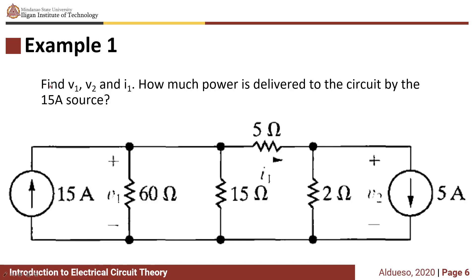Now for the first example, find V1, V2, and I1 and show how much power is delivered to the circuit by the 15A source.